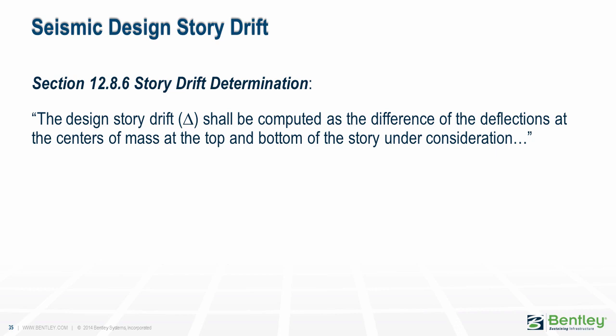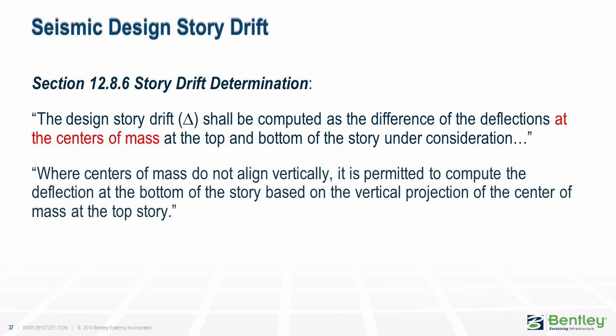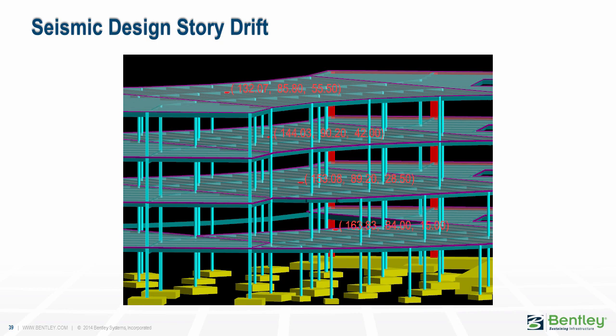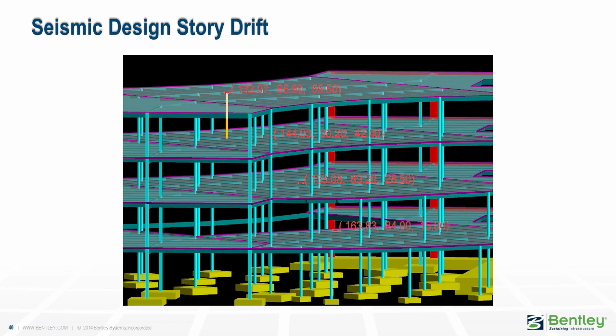As discussed earlier, drift is the difference in the deflections between two adjacent stories. Section 12.8.6 indicates where these drifts are to be measured — they are to be determined at the center of mass. When one floor varies from another, don't just use the displacements at the centers of mass for each story. Rather, use the displacement at the center of mass of a given story and the displacement at the point vertically below that on the next level down. Take this structure for example: because of the change in floor plan at each level, the centers of mass are at different locations. For the calculation of drift at the roof, the displacement at the roof center of mass is determined, as well as the displacement at a point on the story below directly below the roof center of mass.